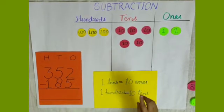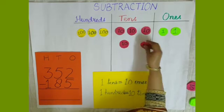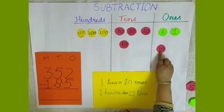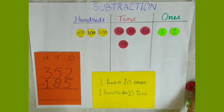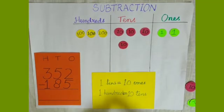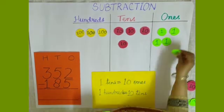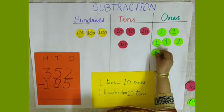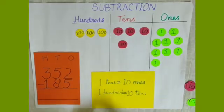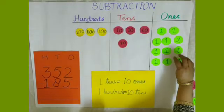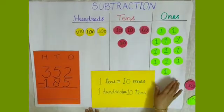First we will borrow from the 10s column — we place this 1 ten in the 1s column. Since 1 ten is equal to 10 ones, we place 10 ones here: 1, 2, 3, 4, 5, 6, 7, 8, 9 and 10. Now instead of 2 ones we have 12 ones.